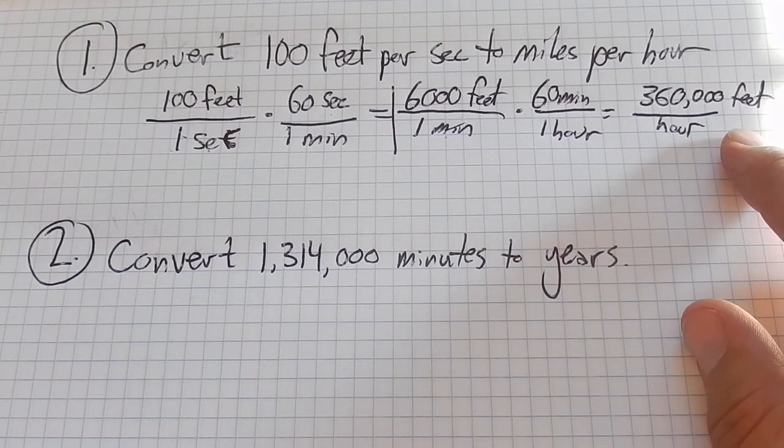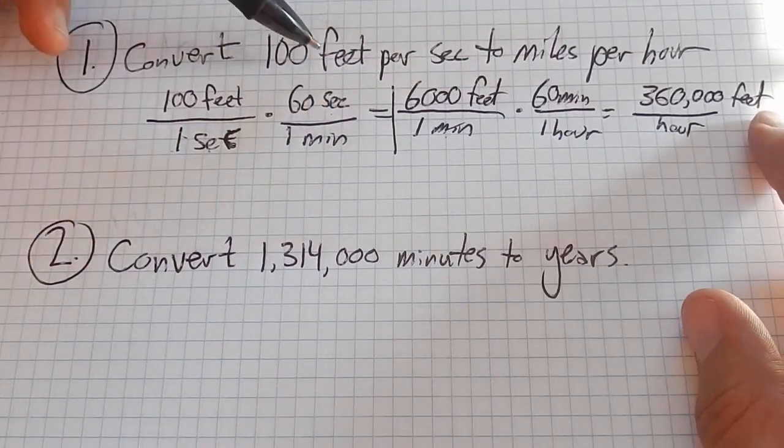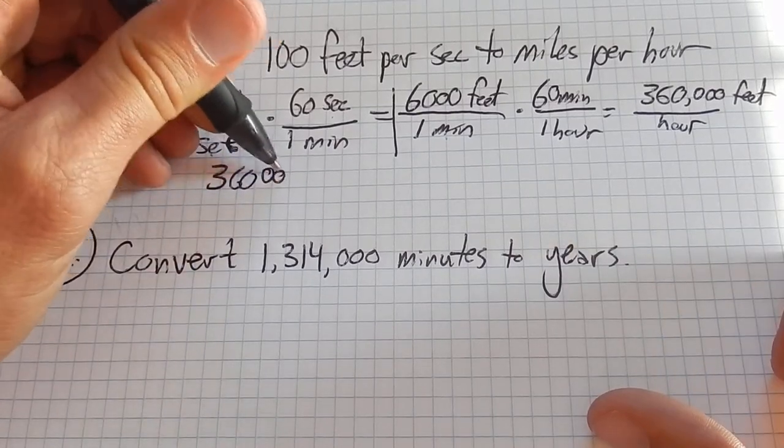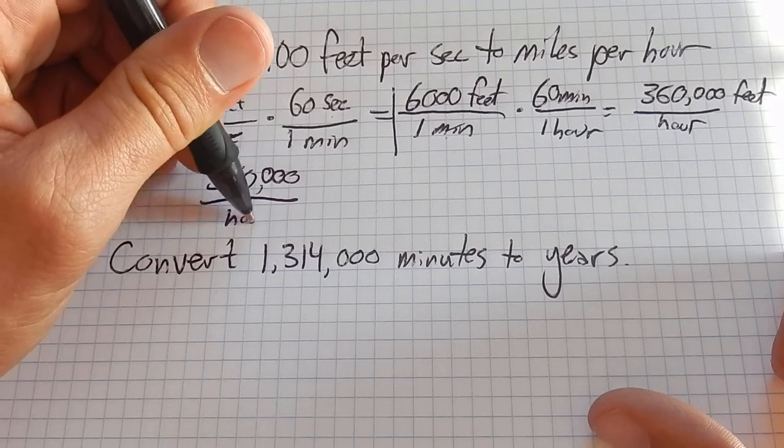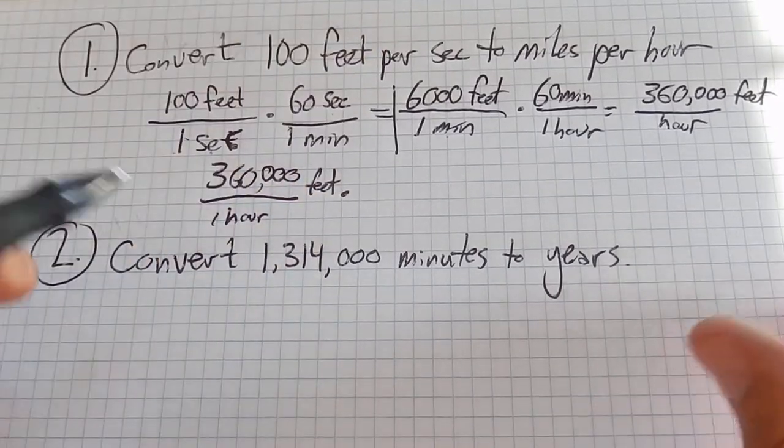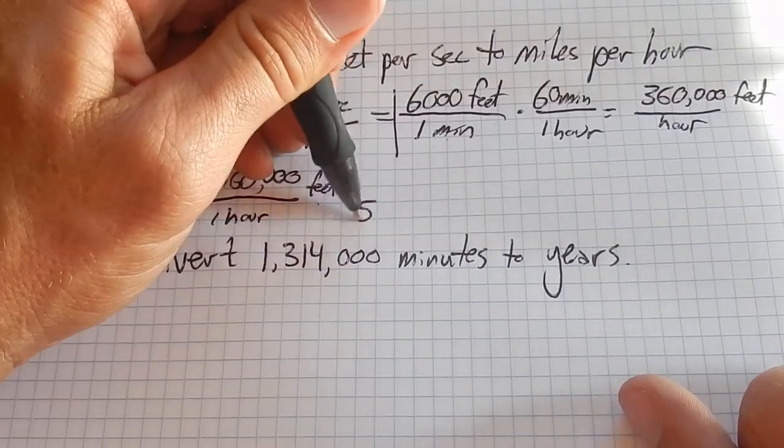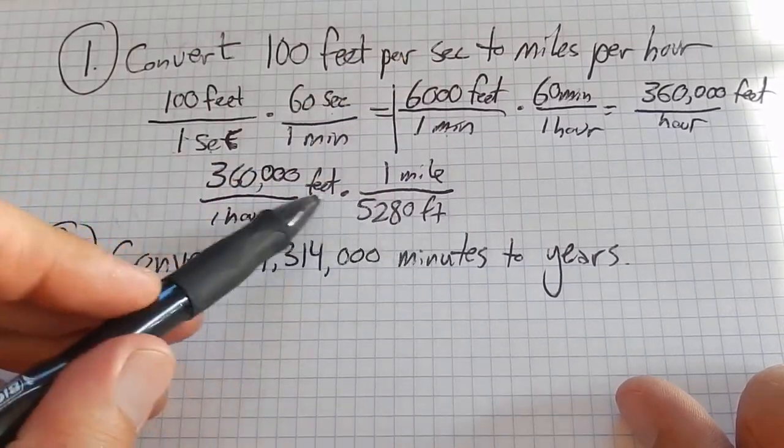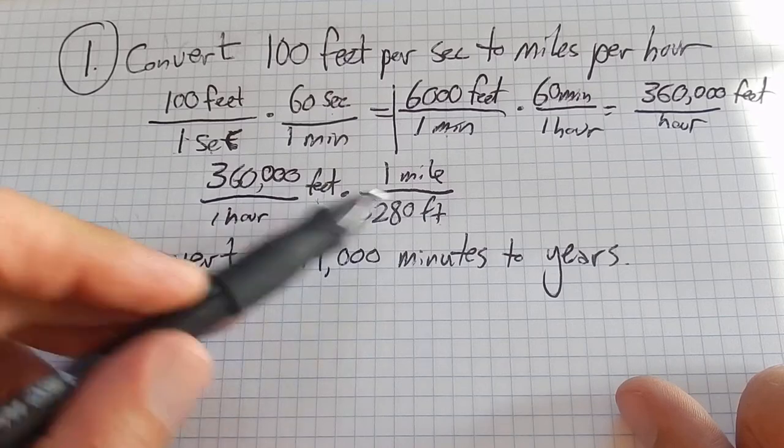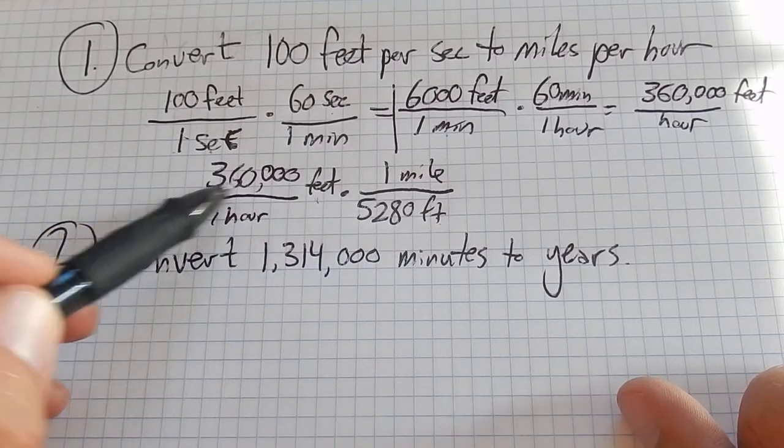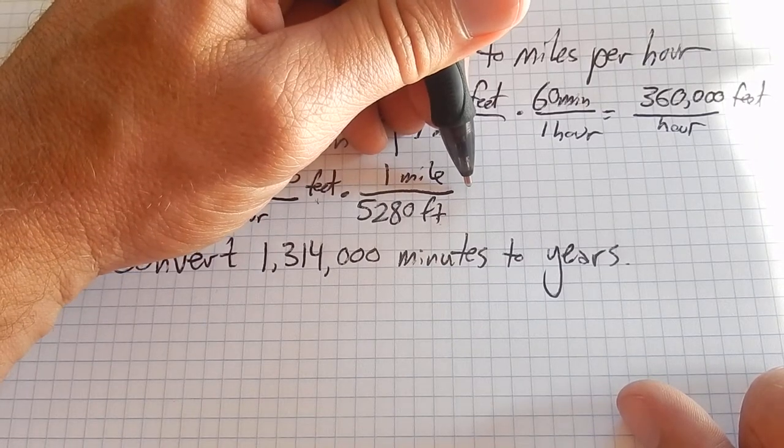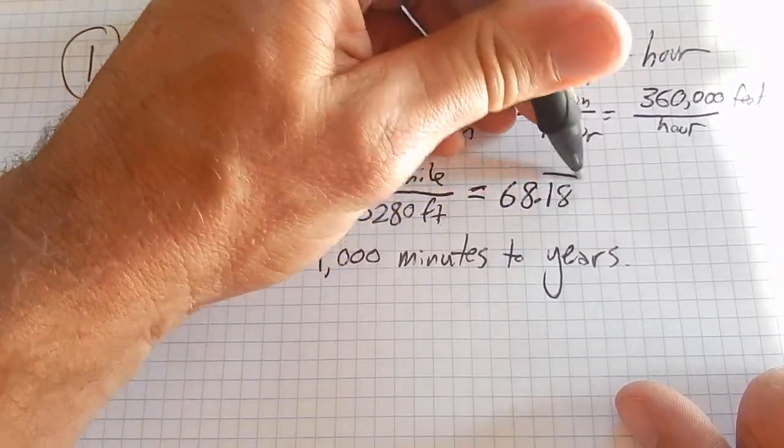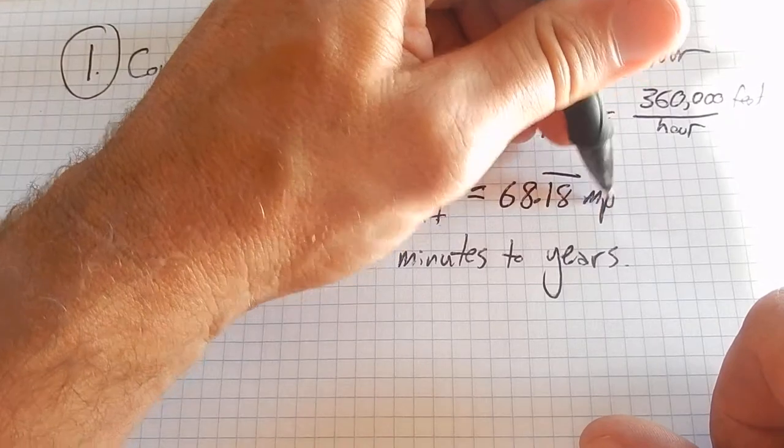Now I have it part of the way there. I have it in hours. Now I need to change these feet into miles. One thing that I know - I'm just going to rewrite it down here so I can deal with it - is feet to miles. There's 5,280 feet in 1 mile. Notice the way I set it up is so that my feet are going to divide out, my feet themselves cancel out. Now what I end up with is that number divided by 5,280, and it looks like I get about 68.18. That 1.8 is repeating. You could just leave it 68.18 miles per hour.